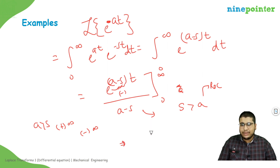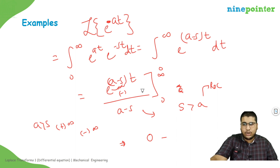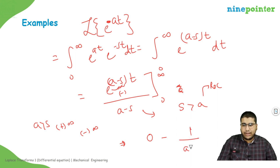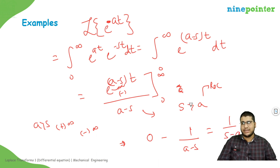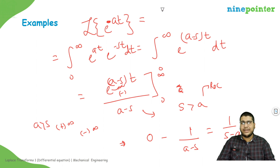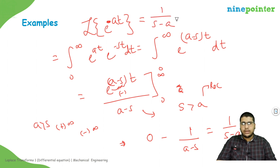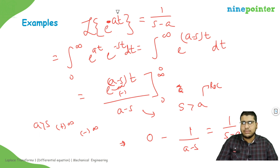Plugging in infinity gives zero, and plugging in zero gives one over (a minus s). So the result becomes one over s minus a. The Laplace transform of e to the at is one over (s minus a), valid for the region of convergence where s is greater than a.